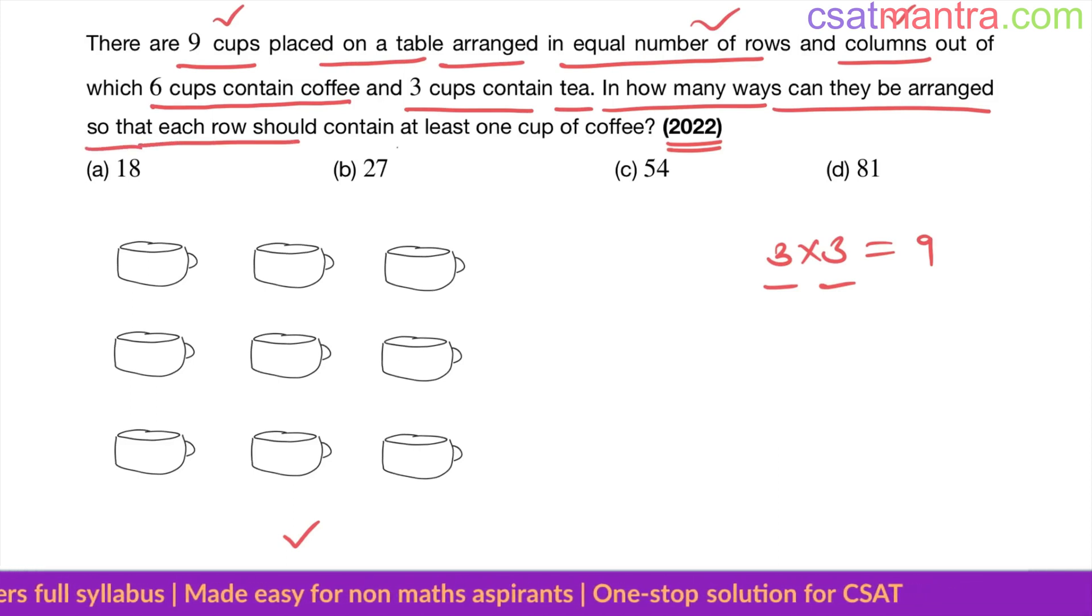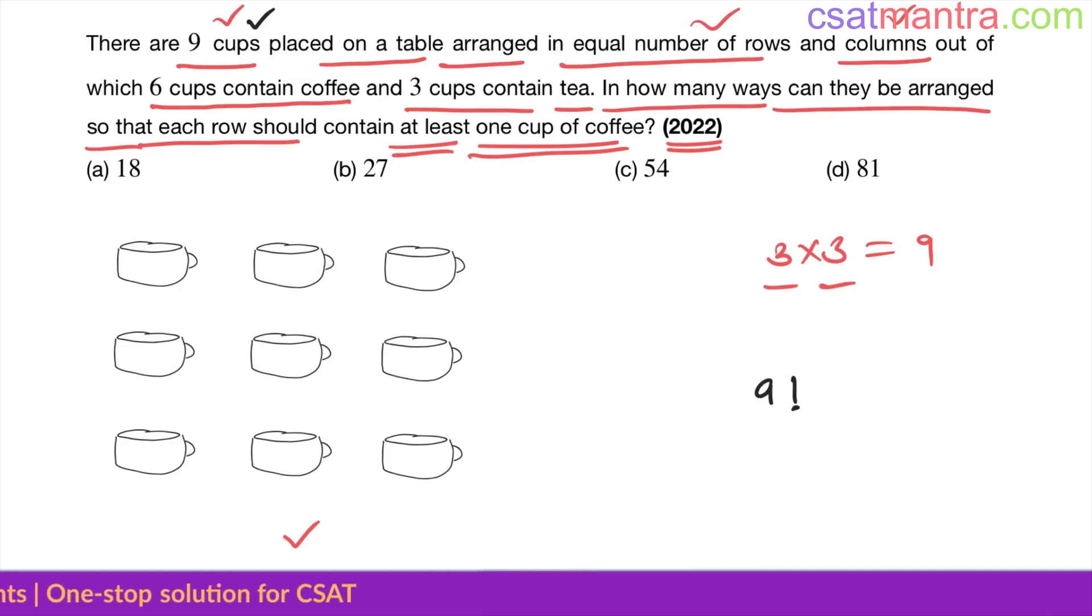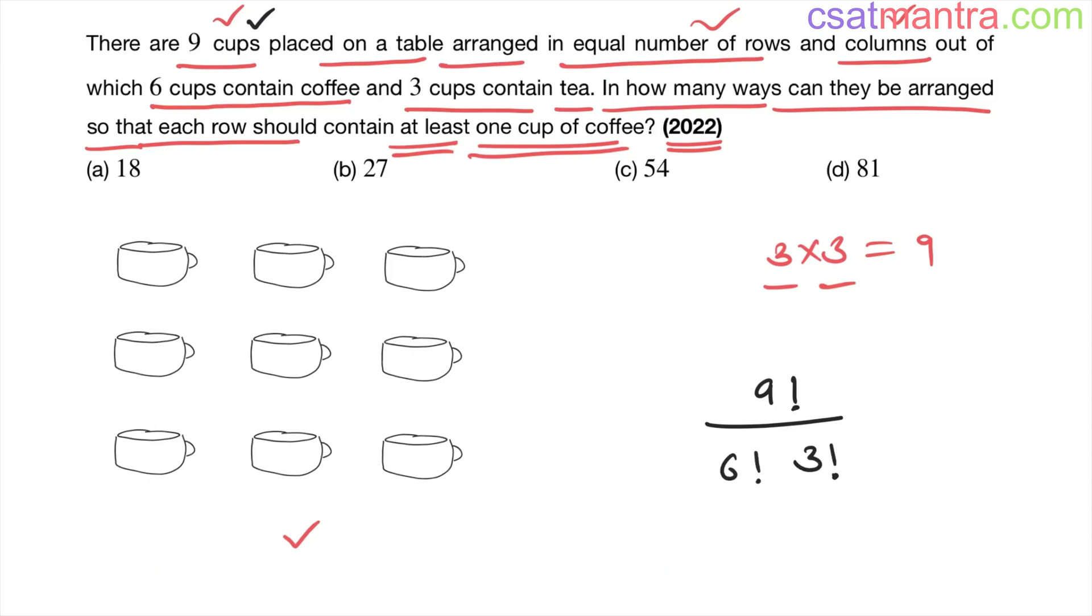Total number of ways you can arrange these nine cups would be nine factorial ways. But out of that, six cups are identical - they contain coffee - and three cups are identical - they contain tea.